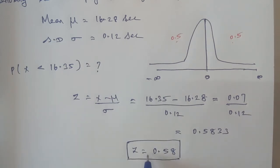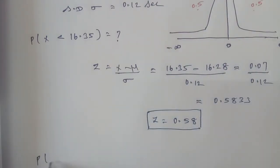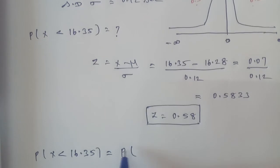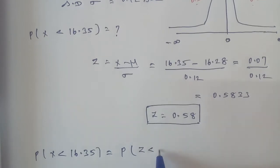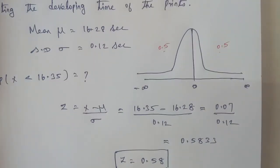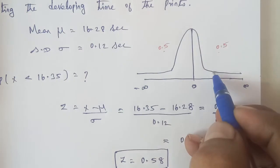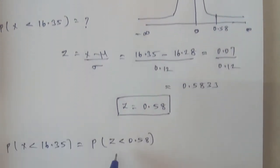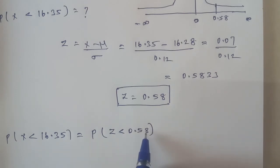Therefore, P(X < 16.35) corresponds to P(Z < 0.58). We now need to find the probability for Z less than 0.58 using the normal distribution table.